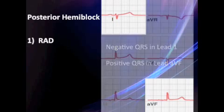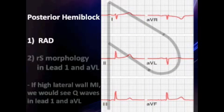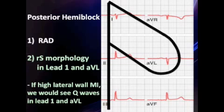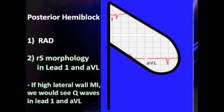And secondly, we have RS morphology in leads 1 and AVL. How do I remember that? By drawing a funny-looking P for posterior. And why look at these leads? We want to rule out a high lateral wall MI. If that's present, you'd have Q waves in leads 1 and AVL — which we do not see here.